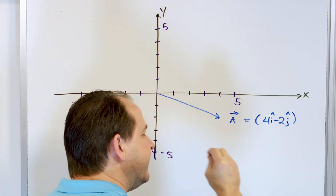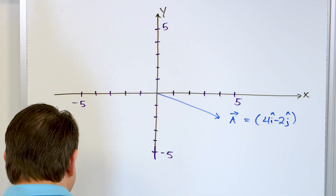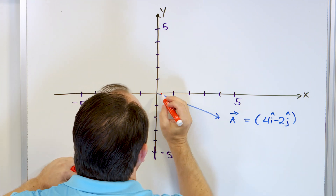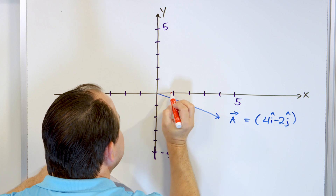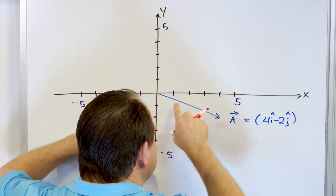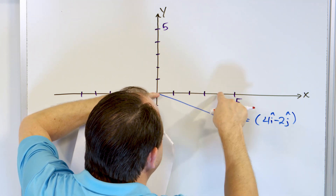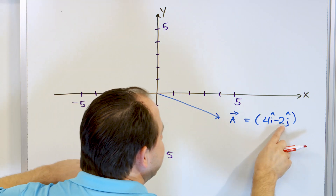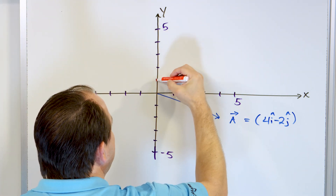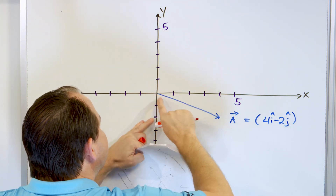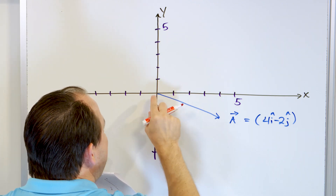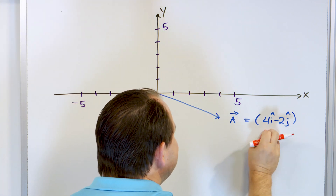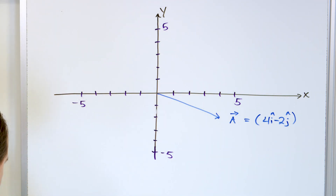Just a quick review: when you say 4 times i, remember that i is a unit vector pointing in the x direction, only one unit long. Multiplying by 4 stretches it out 4 times, so it stops at x = 4 — that's the x component. Negative 2j flips j around and stretches it down by 2, stopping at y = -2. That's the y component. Together they define vector A.